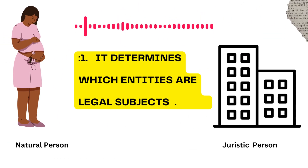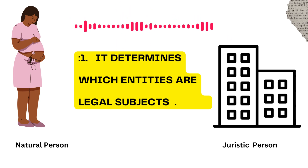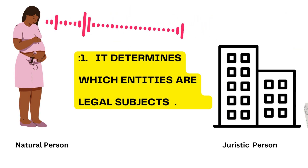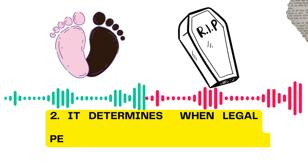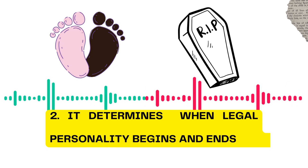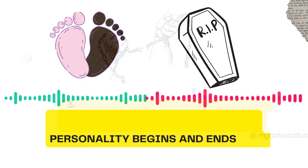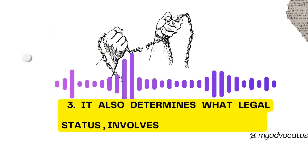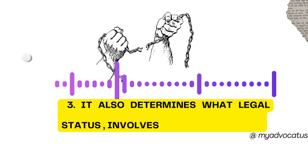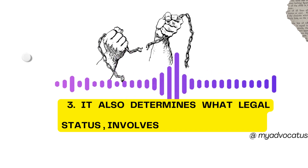One, it determines which entities are legal subjects. Two, it determines when legal personality begins and ends. Three, it also determines what legal status involves.